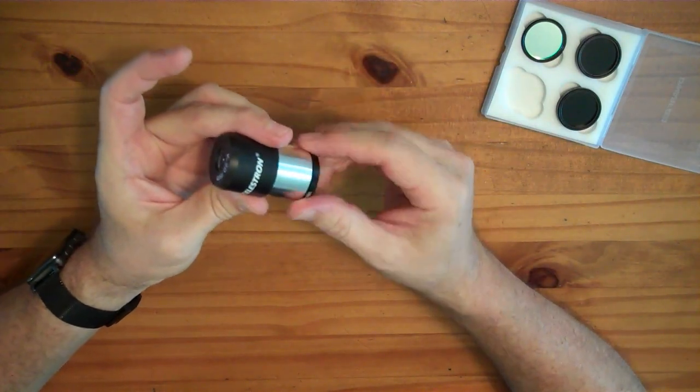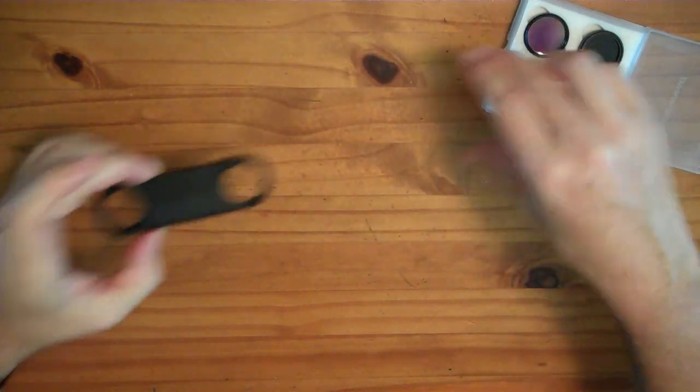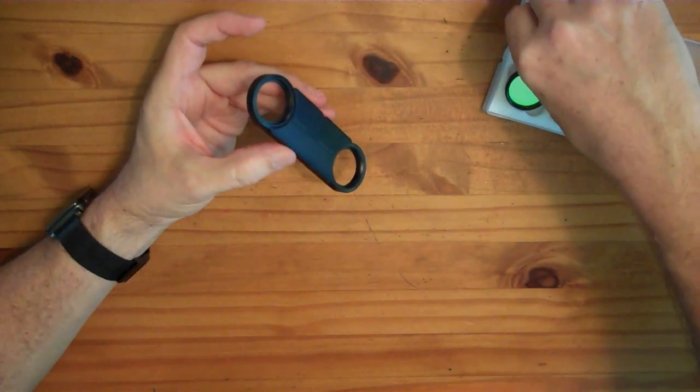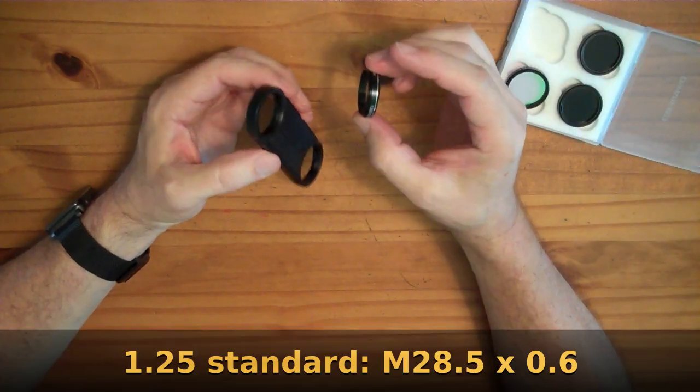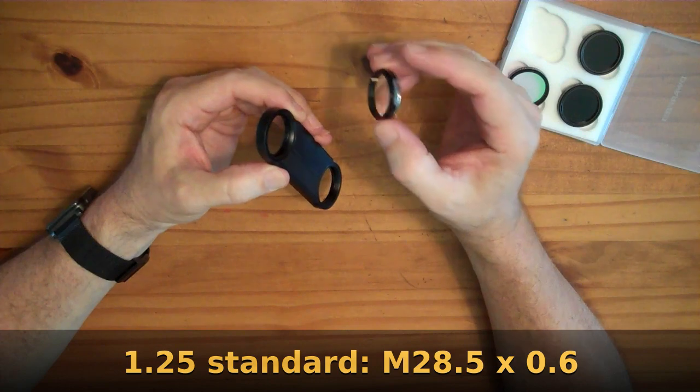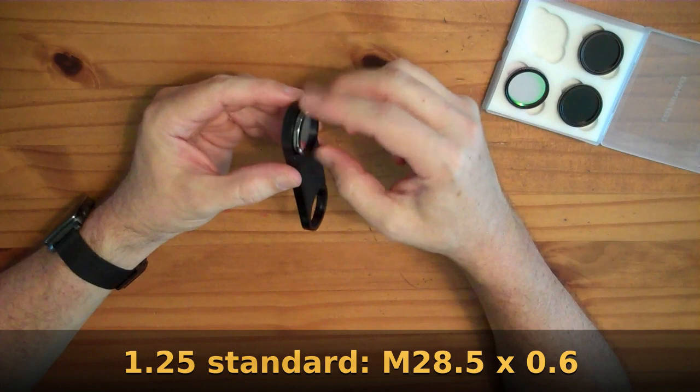So there's a little bit of tolerances, you can make it a little smaller or a little bigger, but generally any filter that's the 1.25 inch filter, and they are 28.5 millimeter by 0.6 thread pitch, should fit and attach and screw into these.